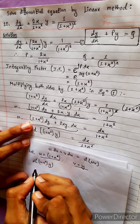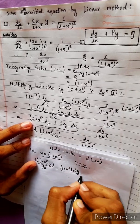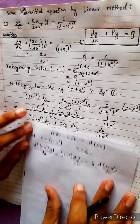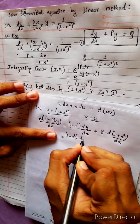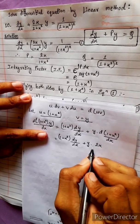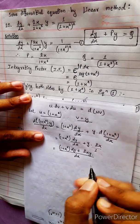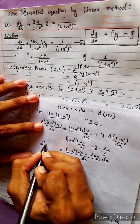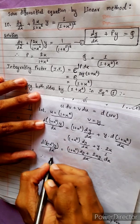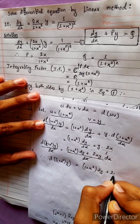Recognizing the product rule: d[(1 + x²)·y] equals (1 + x²) dv plus v du, where the derivative of 1 is 0, the derivative of x² is 2x. Therefore, d[(1 + x²)·y] equals (1 + x²) dy plus 2xy dx.